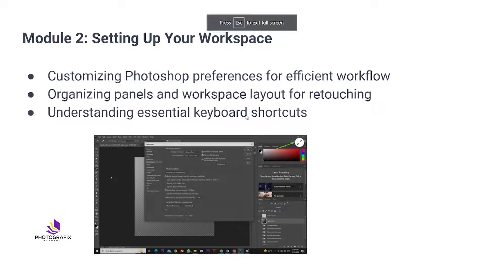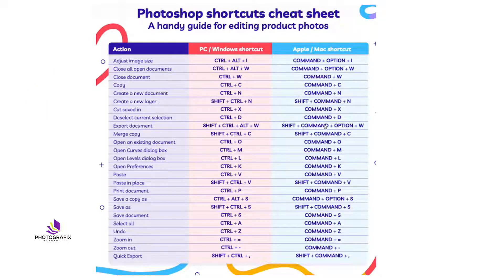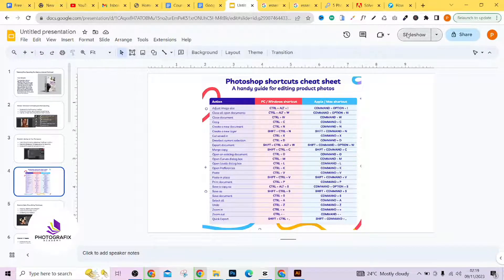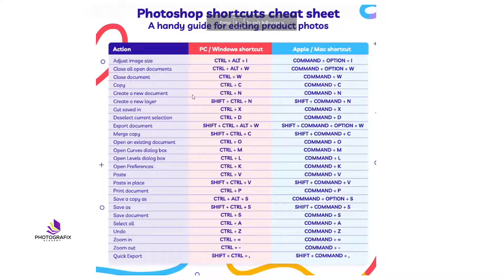Moving forward, let's look at essential keyboard shortcuts for your retouching workflow. We're going to look at ones that are not too complex so you can understand them quickly. Let's open Photoshop and take them one by one. The first thing we are going to look at is adjusting image size — it's Ctrl+Alt+I for Windows users, and the equivalent command for Mac users is shown on the right-hand side of the shortcuts guide.